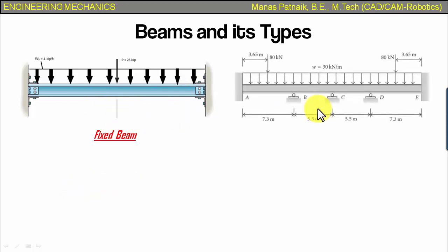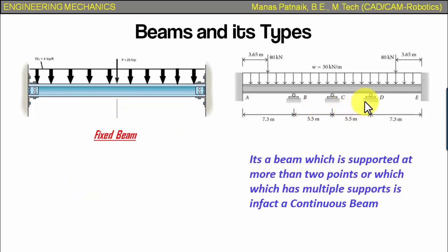And finally, we have this one. And if you watch carefully, the number of supports is more than two. So if the number of supports is more than two, we call that beam as a continuous beam. That's it.